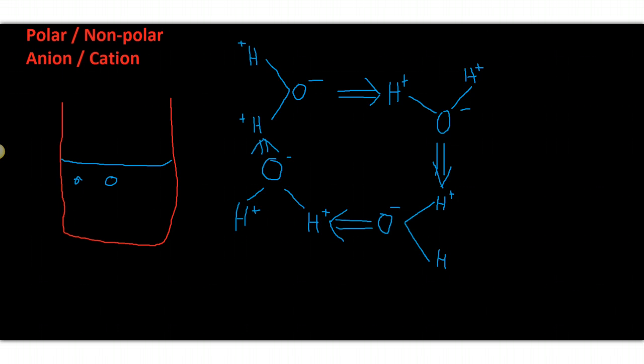The first type of particle I'm going to talk about is a polar molecule. Now a polar molecule is a molecule that has a neutral charge. It's neither positive nor negative, but it has a positive end and a negative end. So a positive pole and a negative pole.